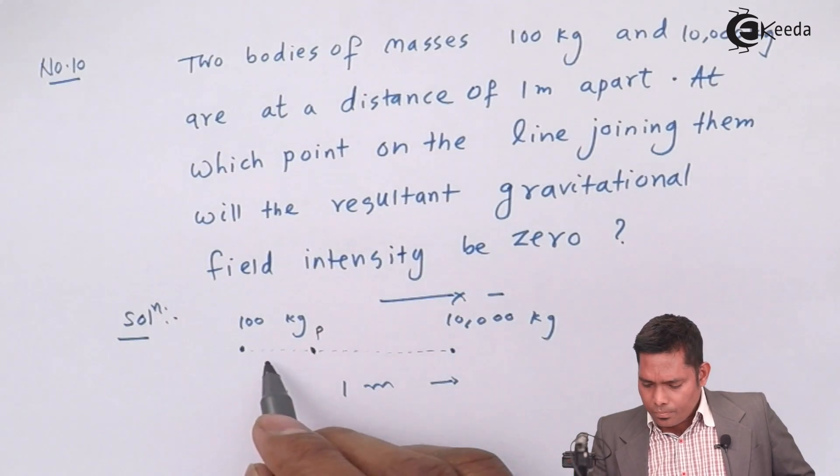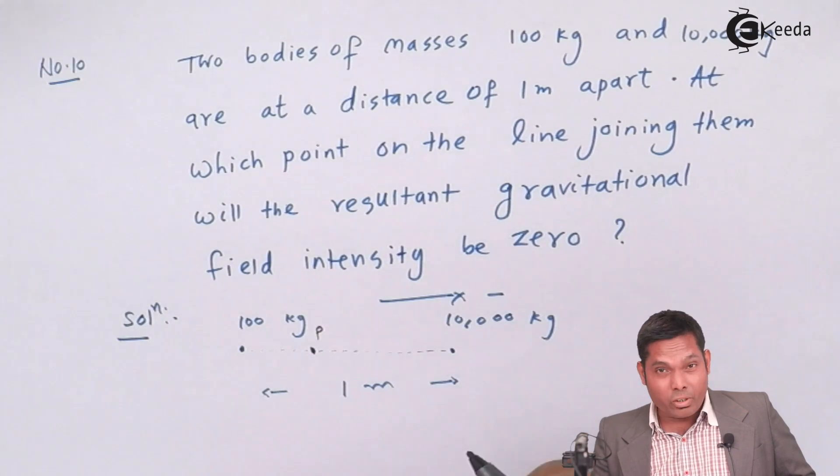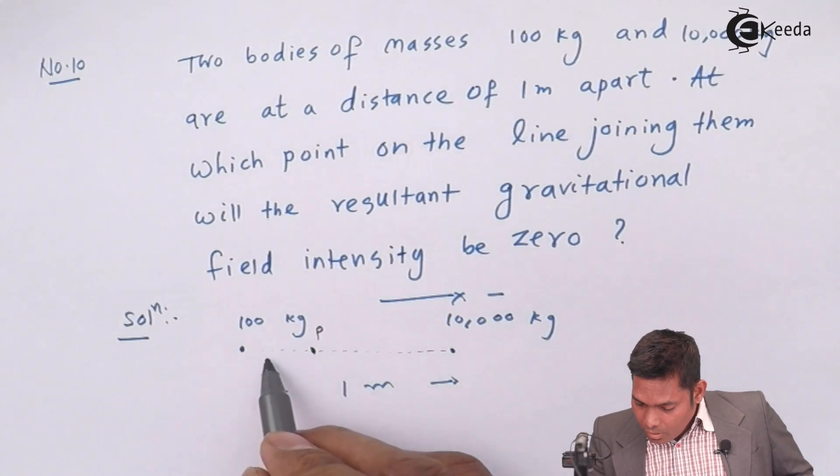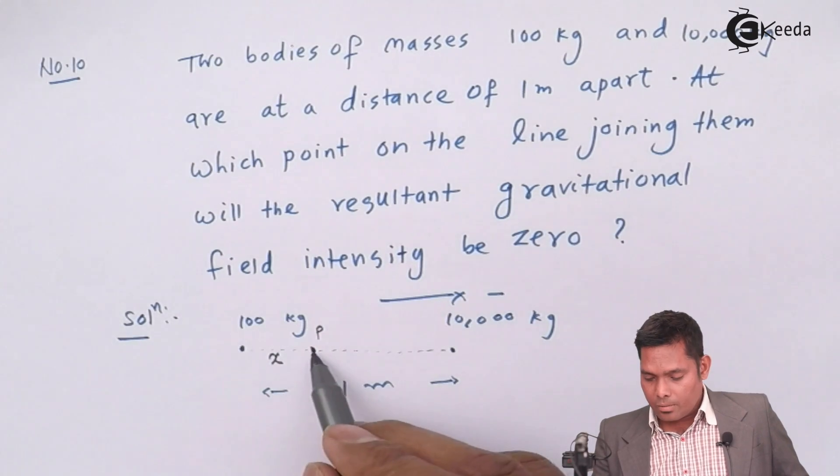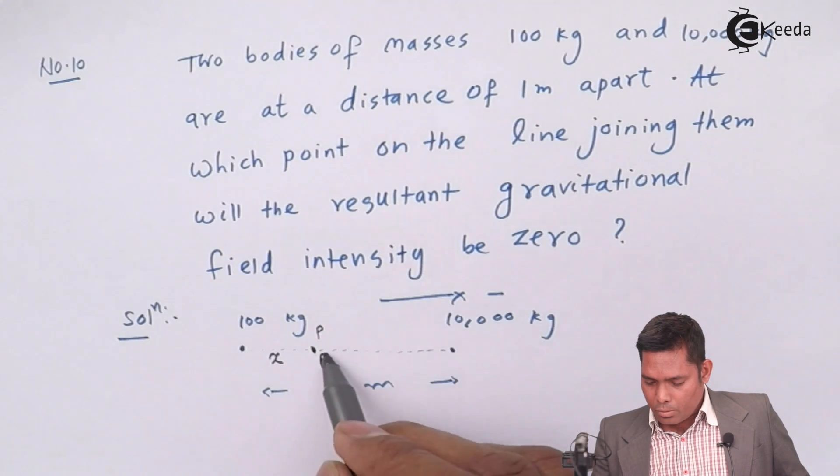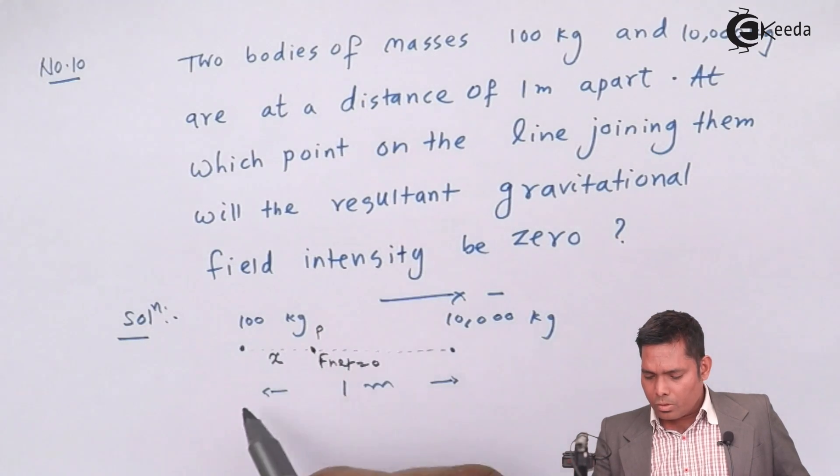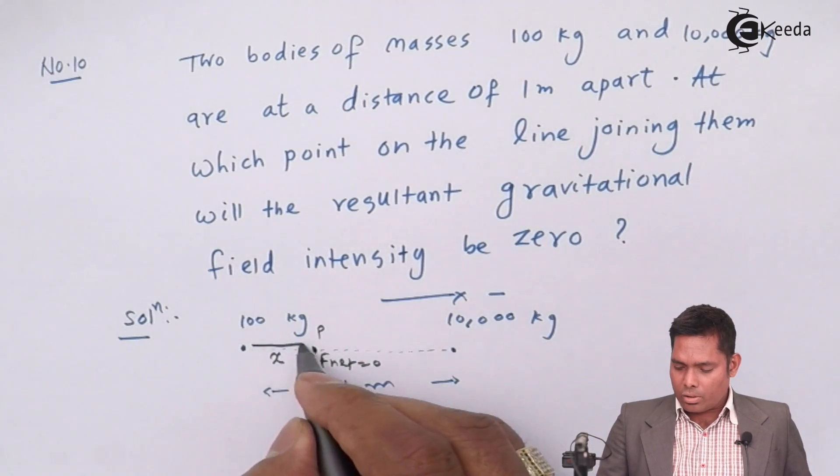Force per unit mass is zero. So if a point mass is placed here, suppose this is placed at the distance x from this 100 kg mass where the field is zero, zero means that the net force is zero. This is the point where the net force is zero.